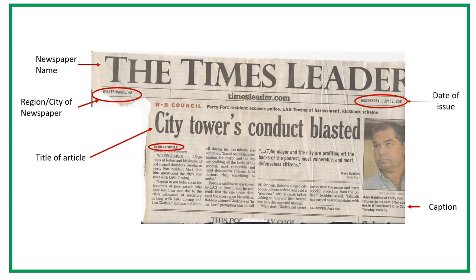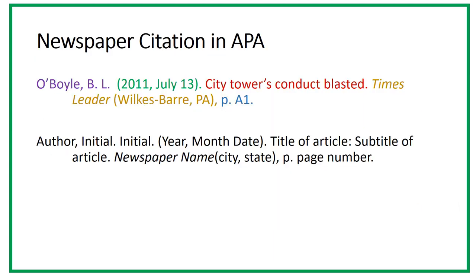Newspaper article citations are very similar to magazine article citations. Again, identify the citation elements, including the city of publication. Begin the citation with the author statement. The date statement is in parentheses. The title statement only has the first word and proper nouns capitalized, and the name of the newspaper is in italics. Usually the name of the city is included in the newspaper name, but if it isn't, put the city in parentheses. Don't include the volume and issue number for newspapers — just the page number is included.